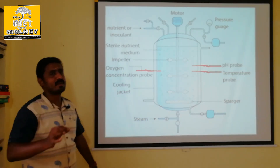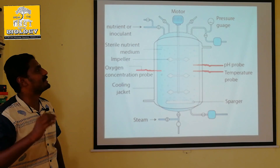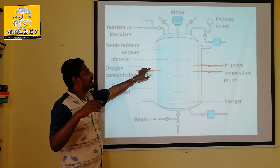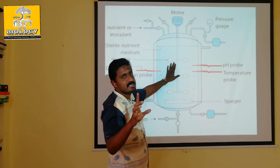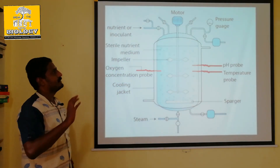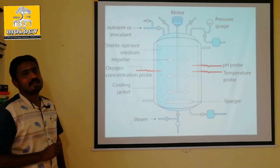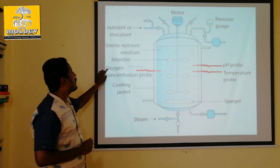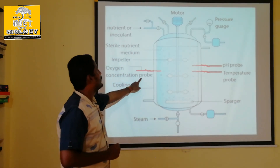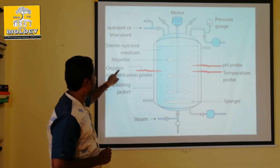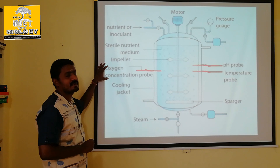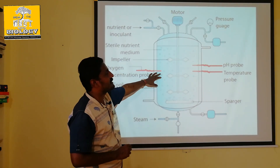Bioreactor — nutrient medium. In the impeller, it is meant for agitation to maintain the temperature inside the bioreactor. That is oxygen supply. You can check the oxygen concentration probe — you can check the oxygen.